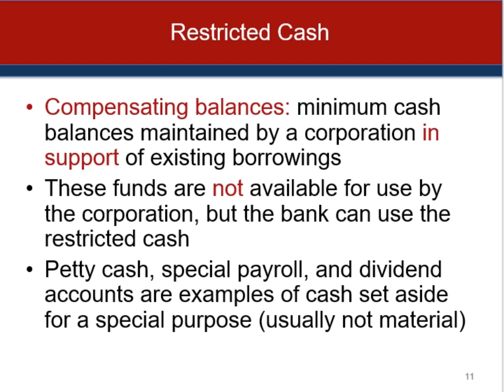It's common practice for an enterprise to have an agreement with a bank concerning credit and borrowing arrangements, and when such an agreement exists the bank may require the enterprise to maintain a minimum cash balance on deposit. That minimum balance is known as a compensating balance. When material, compensating balances that result in legally restricted deposits must be separately classified in the balance sheet. The nature of the borrowing arrangement determines whether the compensating balance is classified as a current or non-current asset.